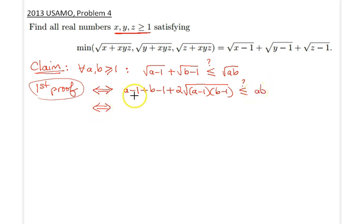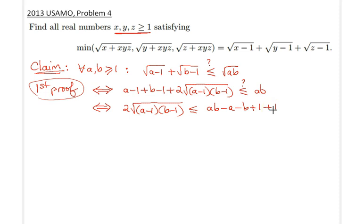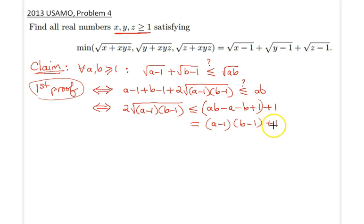I will reorganize the terms, leaving the radical expression on the left-hand side and everything else on the right-hand side. So therefore I would have two times √((a−1)(b−1)), which is less than or equal to ab − a − b, keeping the plus 1 separately. It is possible to factorize the right-hand side, giving us (a−1)(b−1) + 1.